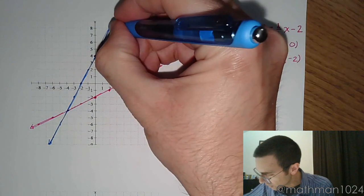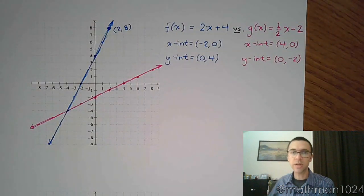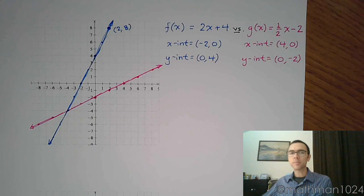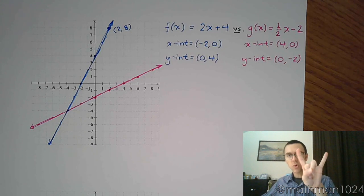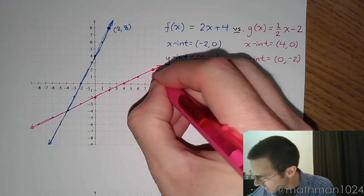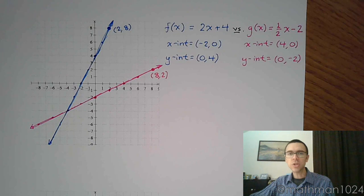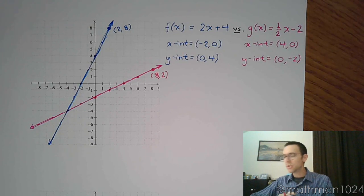So up here you have an x-intercept of 4, 0. Here we have this ordered pair in blue for f of 2, 8. Now, take those coordinates and flip them around, and it becomes 8, 2, which we see right there on g.